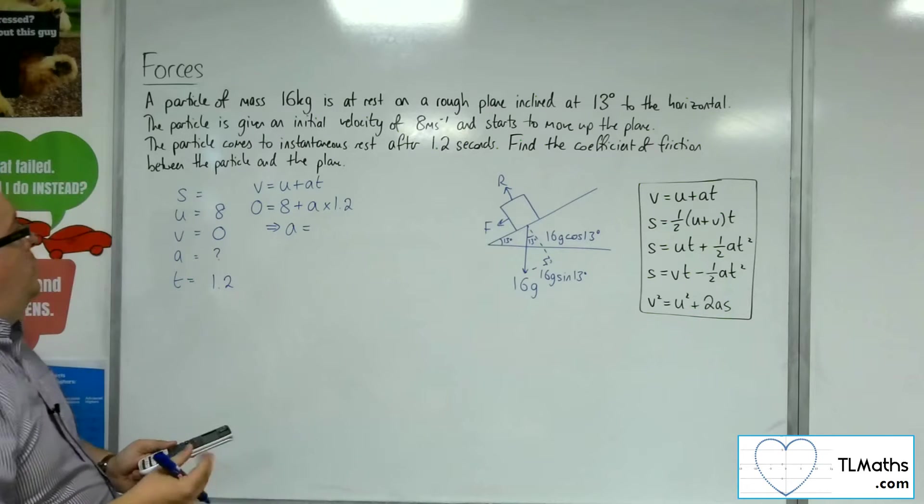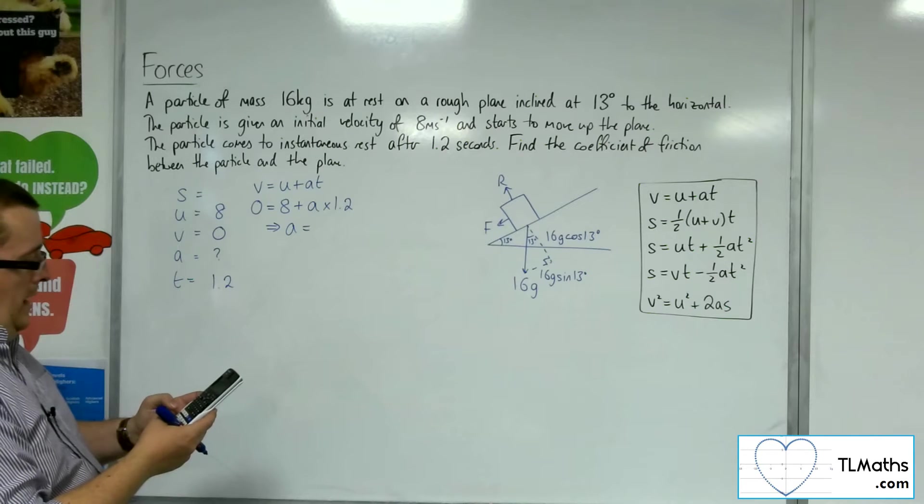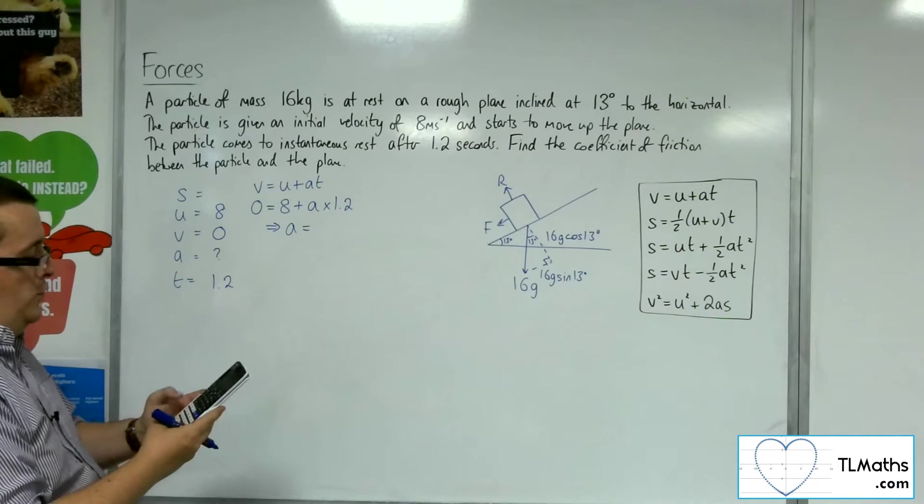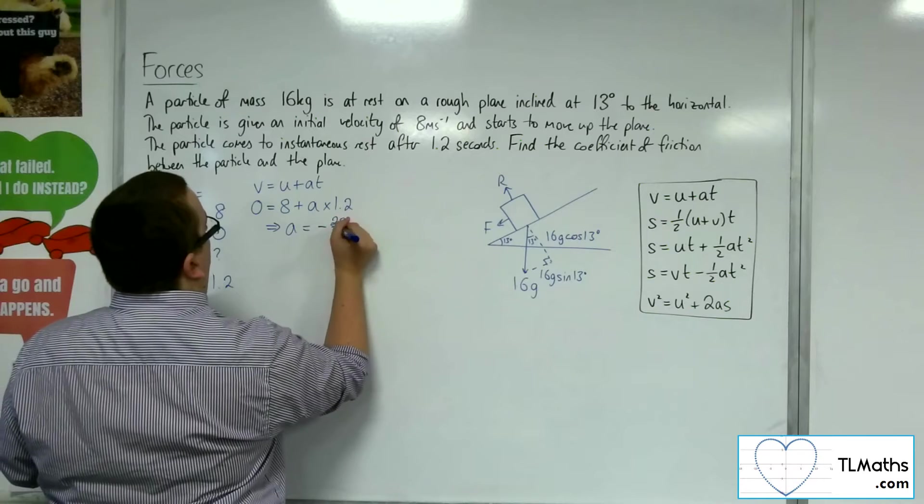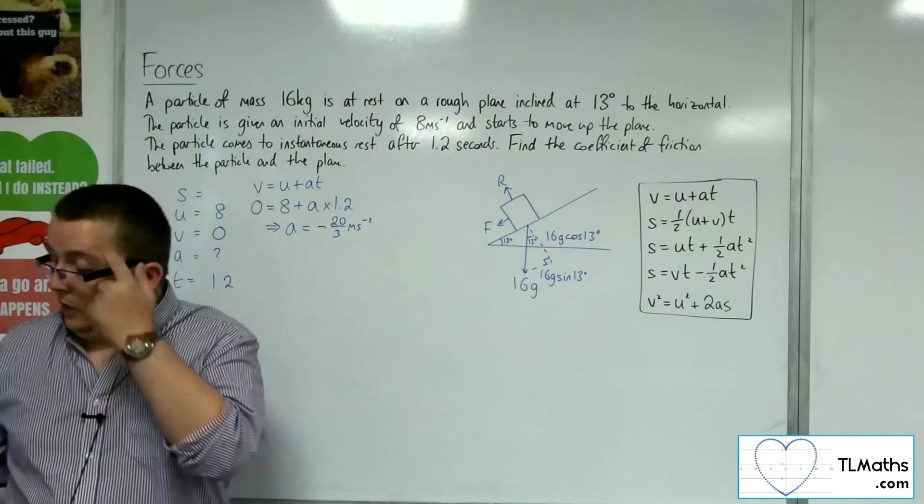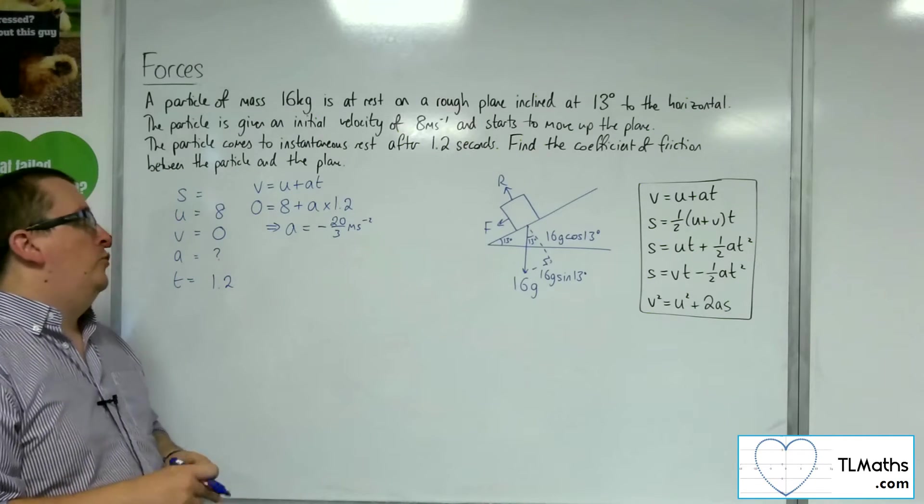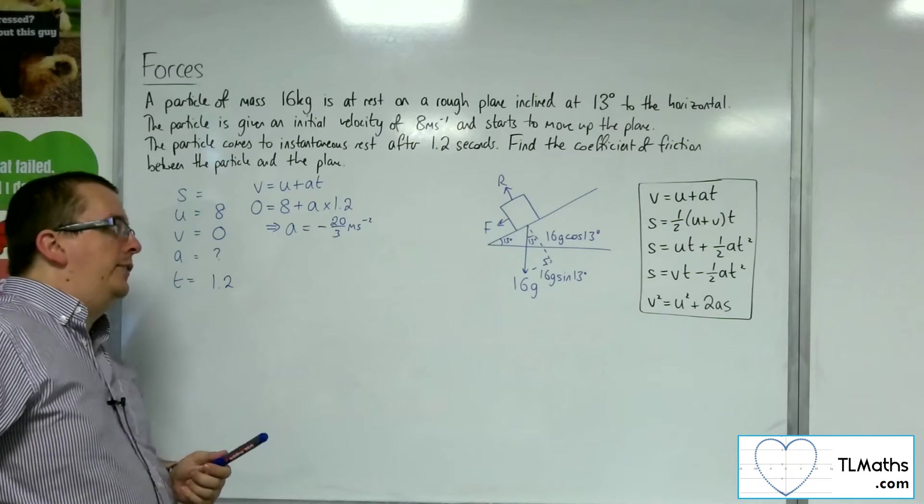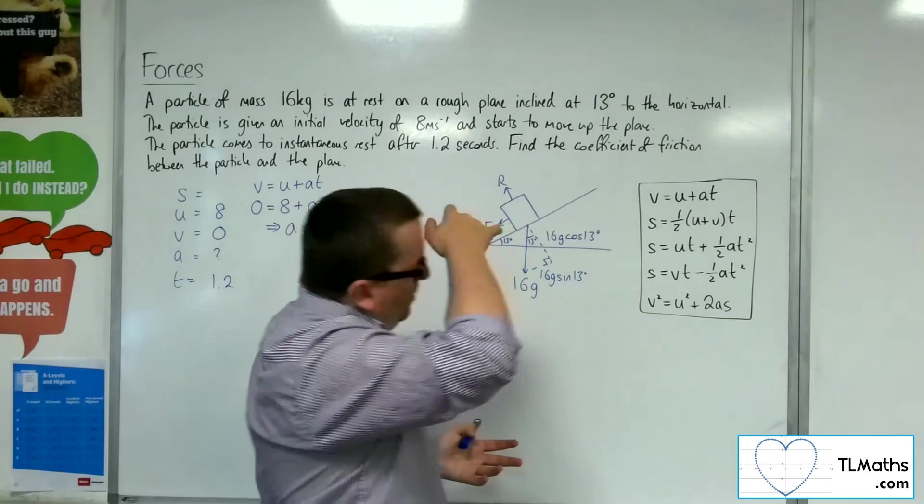Taking the 8 to both sides, we've got minus 8 and divide that by 1.2. That gets us minus 20 thirds meters per second per second. So this is a deceleration of 20 over 3 meters per second per second if we're being proper about it.